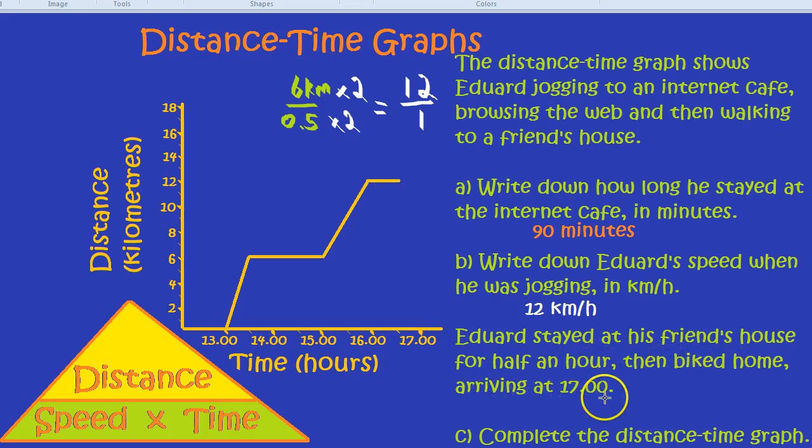Then he biked home, arriving at five o'clock. Many students get confused about this bit and they're like, how on earth would I complete that diagram? I don't know what it looks like. Well, we do know he arrives home at five o'clock. So, we don't even need to work out the speed. We simply join up the end of him being at his friend's house to arriving home at five o'clock. And home is, of course, back where he started. So, you're going back to zero. And that has completed the distance time graph.